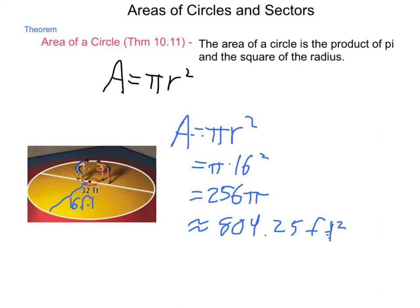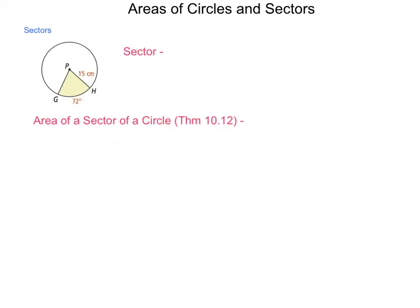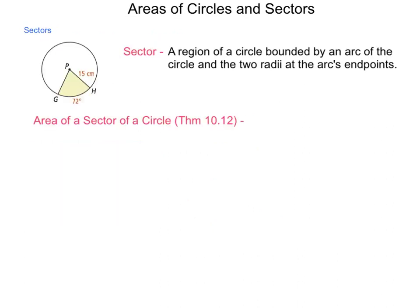But, the newer portion of this lesson, for most people, is going to be areas of sectors. So, let's take a look at what is meant by a sector. A sector, by simple definition, is a region of a circle bounded by an arc of the circle and the two radii at the arc's endpoints. So, in the diagram that is shown,